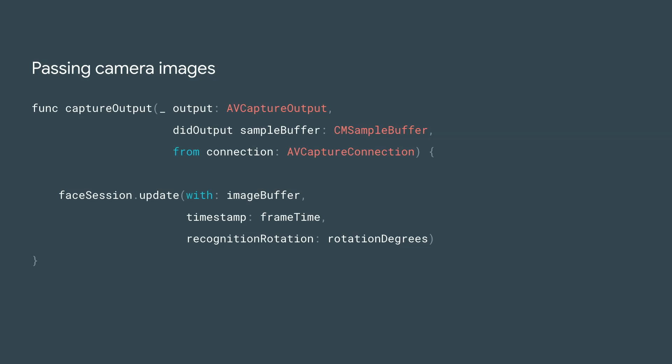Now that your session is initialized and configured properly, we can start sending camera images to the session. In this application, we have chosen to get camera images by creating an AV Capture session with video frames from the front camera. Here you can see our implementation of AV Foundation's delegate method, which passes the image, a timestamp, and a recognition rotation to our face session.